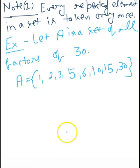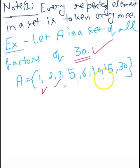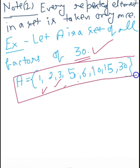Let's see an example. Set A is the set of all the factors of 30. We need to find all elements satisfying this condition. The factors of 30 are 1, 2, 3, 5, 6, 10, 15, and 30. All these elements satisfy the condition, so they are all elements of set A written within curly braces.